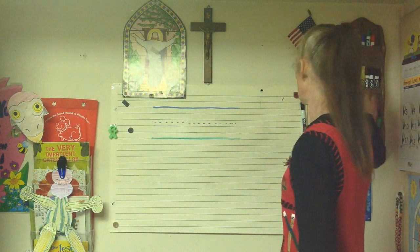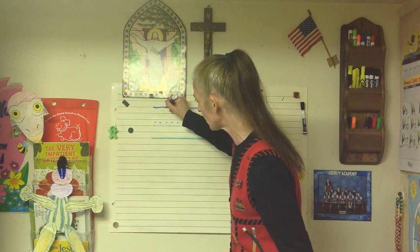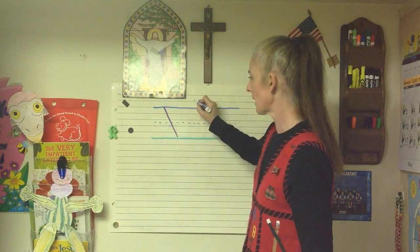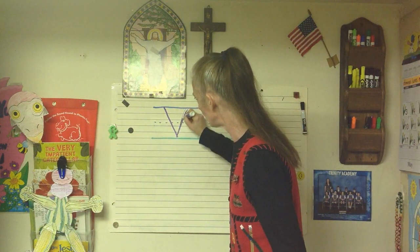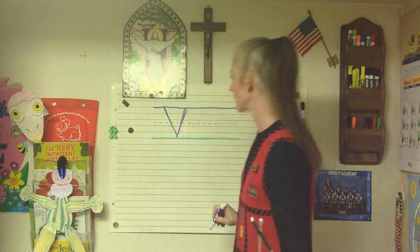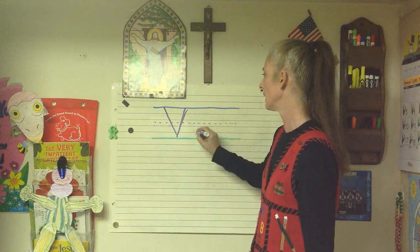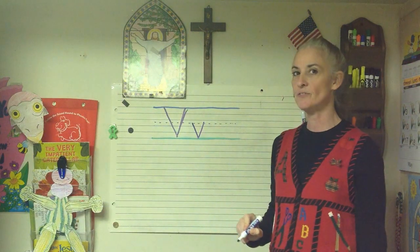How do we make a V? What strokes do we need? Right, slants — similar to the W. Making a V is like making half a W. We're going to start at the skyline, uppercase, and slant to the ground, then slant back up. Lowercase looks just like it, except it's a plain line letter starting at the plain line — slant to the ground line and slant back up.